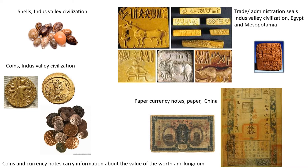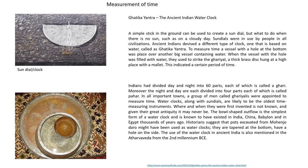Trade was largely dependent upon the barter system in ancient times until currency was invented. Indus Valley people were known to have invented currency coins, trade scales, and administration scales to track goods for sale to distant places inland and overseas. Mesopotamians and Egyptians also used clay tablets as trade records. Currency coins of metals such as copper, bronze, gold, or silver were introduced much later. It was China which first introduced paper currency notes, still in use today. Coins and currency notes carry information about value as well as the issuing kingdom.